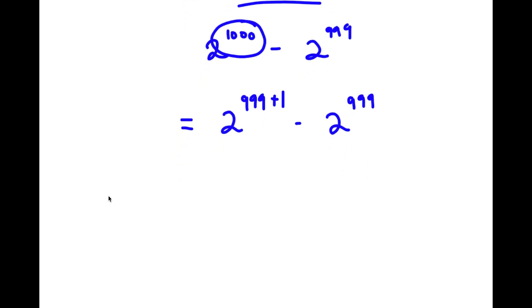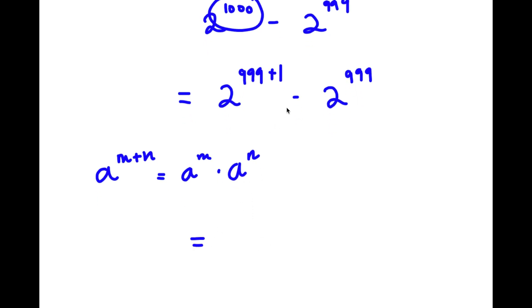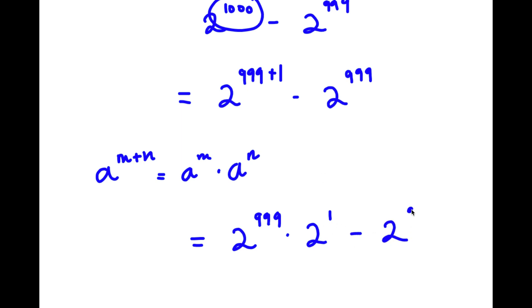If I have something in the form a to the power of m plus n, this is equal to a to the power of m times a to the power of n. So 2 to the power of 999 plus 1 is going to equal 2 to the power of 999 times 2 to the power of 1. Now I have this minus 2 to the power of 999.